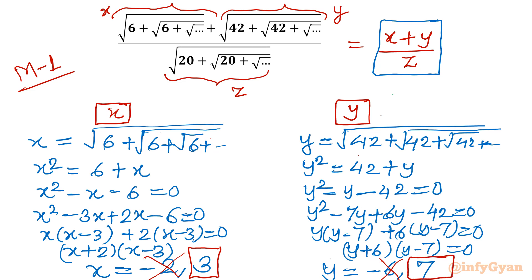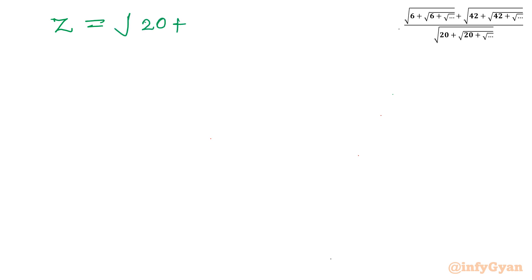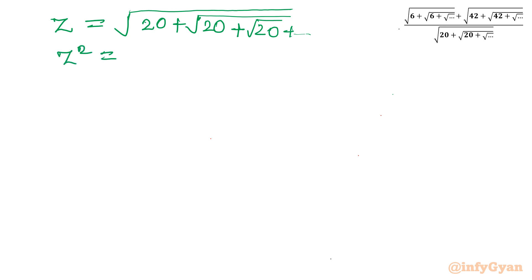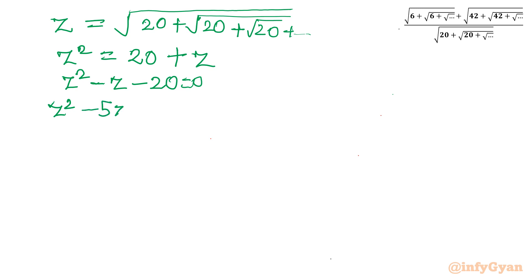So far we have x equals 3 and y equals 7. Now let us calculate z, the denominator. z is square root of 20 plus square root of 20 plus square root of 20 and so on. Squaring both sides gives z squared equals 20 plus z. Taking all terms to one side: z squared minus z minus 20 equals 0. I split the middle term as minus 5z plus 4z, whose sum is minus z and product is minus 20z squared.